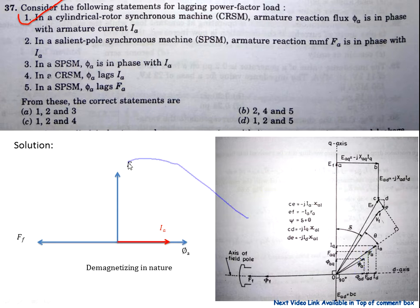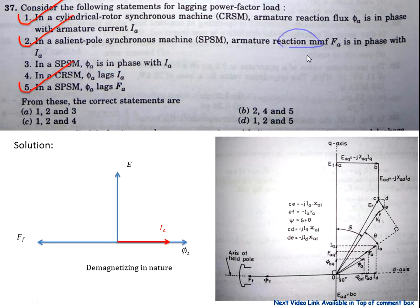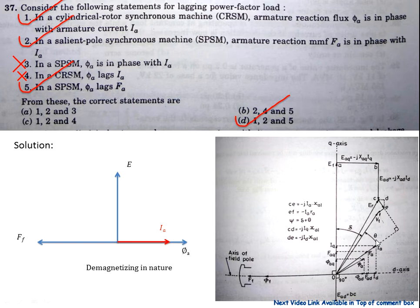Now come to statement 5: In the salient pole synchronous machine, φA lags from FA — that is correct. Now statement 2: the armature reaction MMF FA is in phase with IA — that is correct. Both statements 3 and 4 are wrong. So the correct statements are 1, 2, and 5, making option D correct.